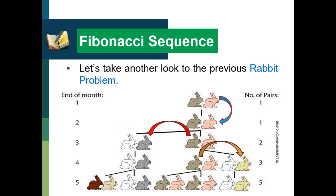At the end of the fifth month, the original pair reproduced another pair, and the first born pair started to reproduce another pair because they are done with their one-month maturity. Still, the second pair reproduced by the original pair will undergo a one-month maturity. So we have five pairs of rabbits after the fifth month. Can you see a pattern now? What will be the number of pairs of rabbits after the sixth or seventh month? Let's explore more.